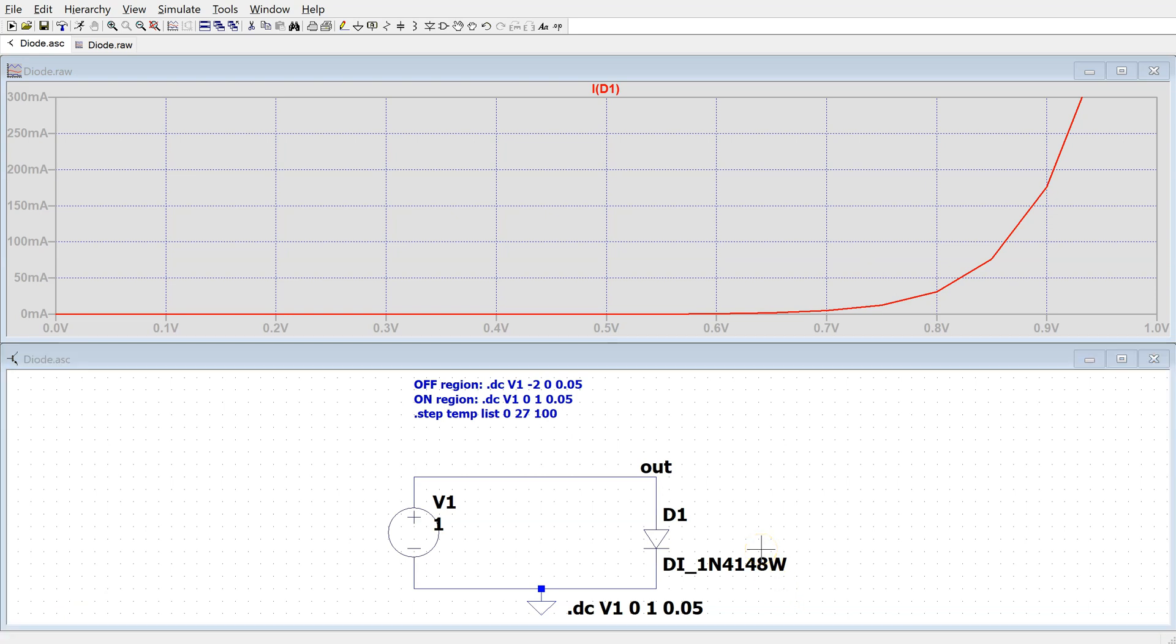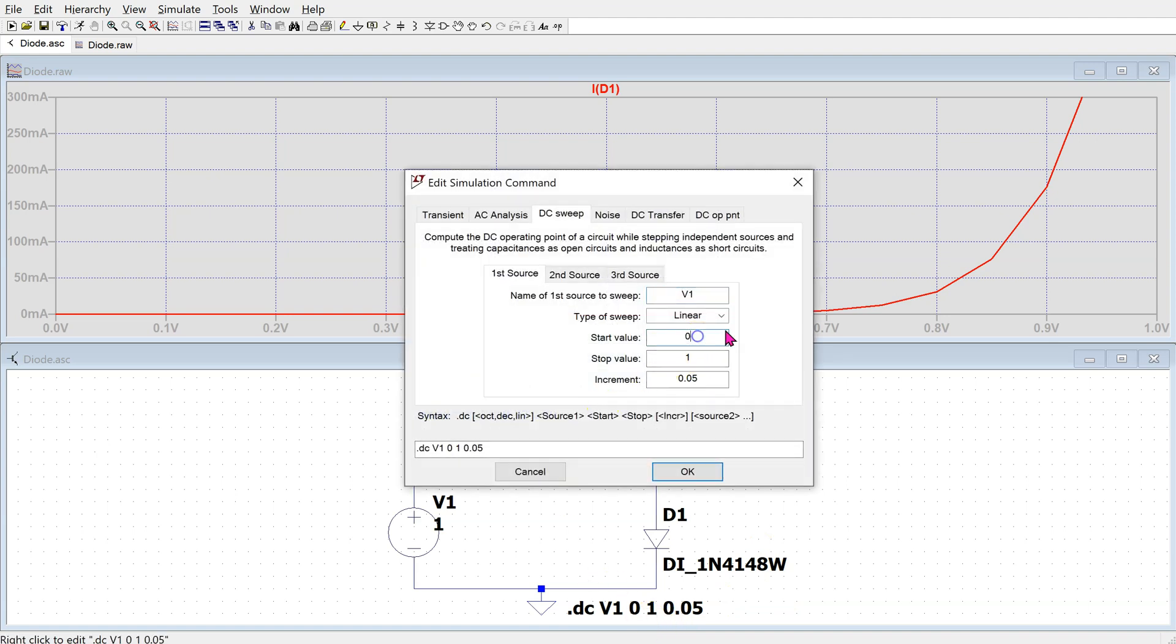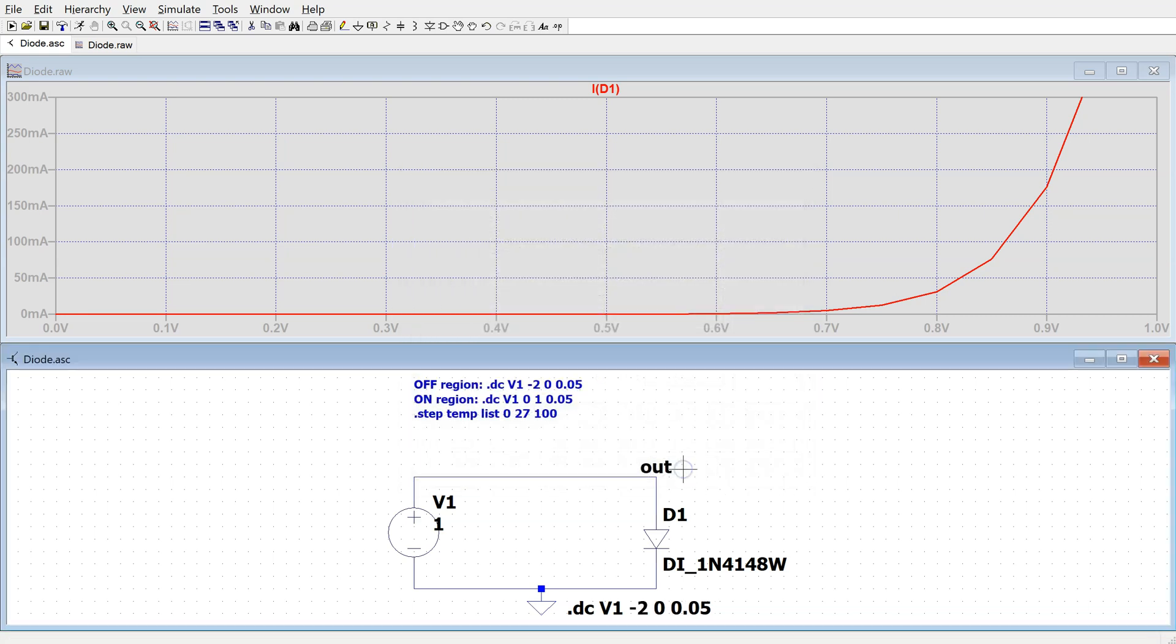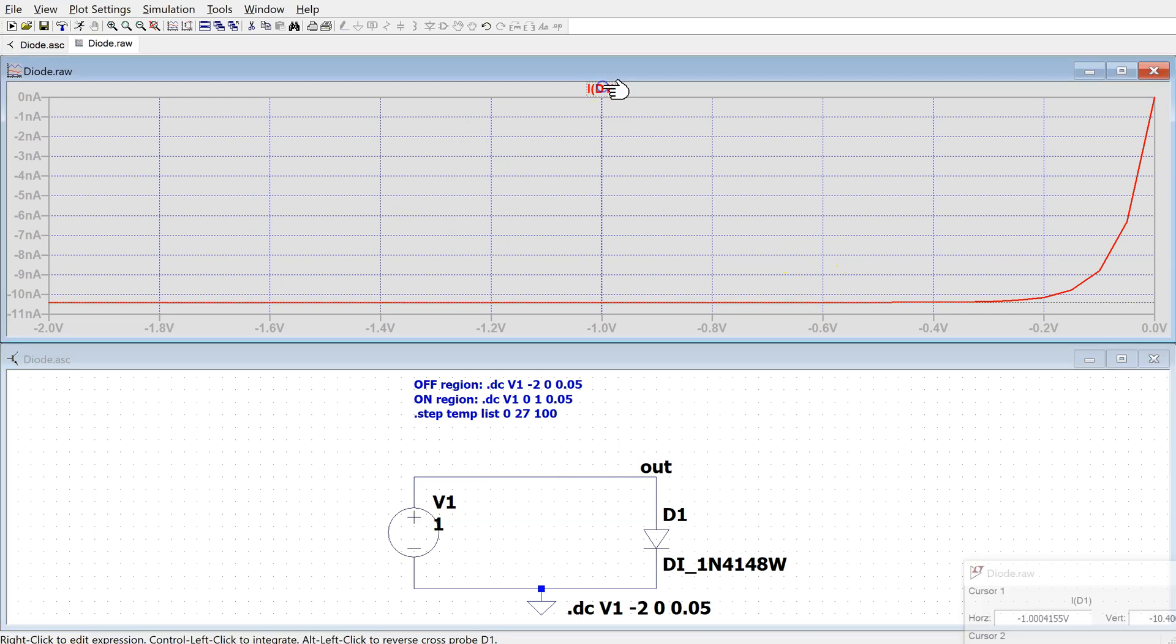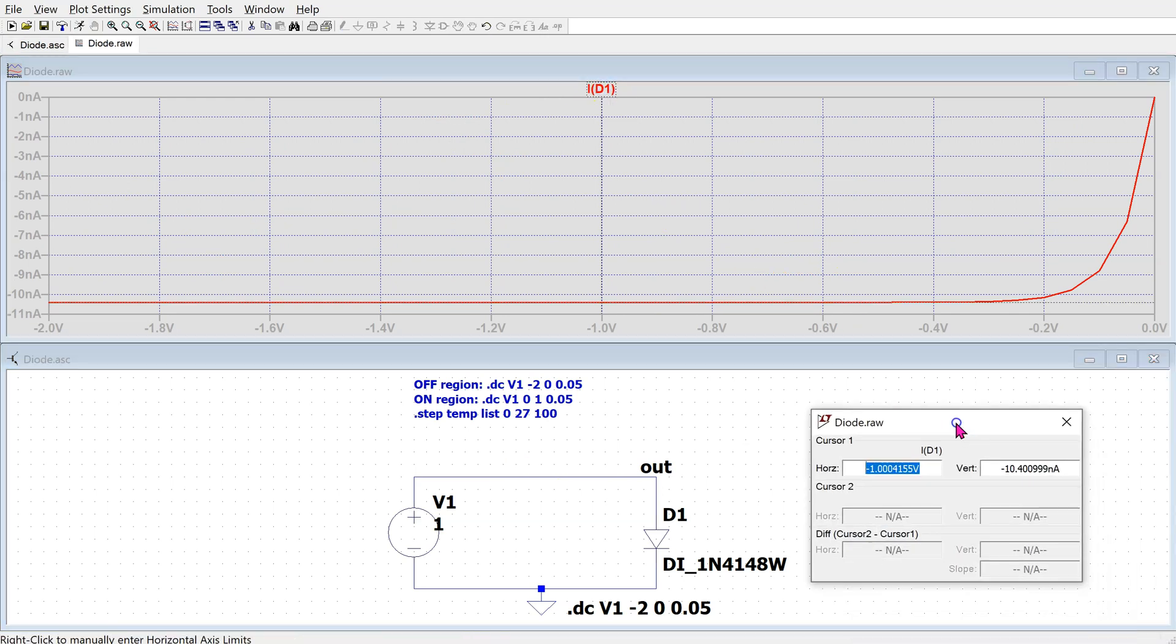To plot the diode characteristics in the OFF region, we modify the DC sweep value as shown here and then re-simulate. And here we obtain the diode characteristics in the OFF region. We can see that the reverse saturation current is around 10.4 nanoamps.